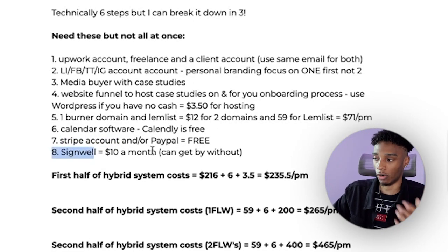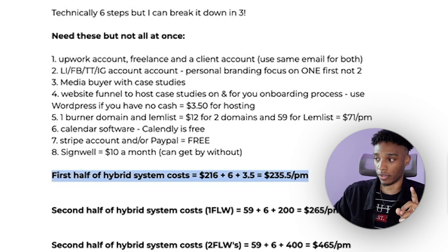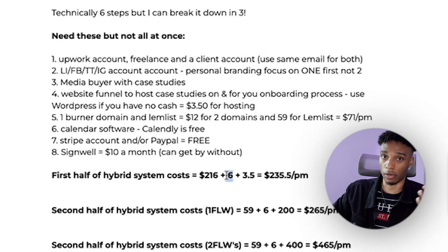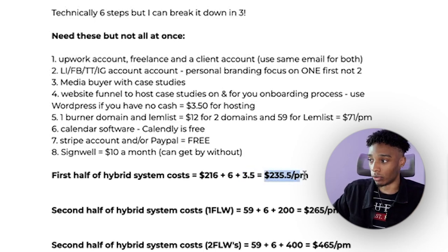There are two sides to the hybrid system: inside Upwork and outside Upwork via cold outreach. The first half of the hybrid system is going to cost around $216 for connects, $6 for a domain, and $3.54 for WordPress hosting — totaling about $235.50 per month. If you don't have that, go sell some shoes on eBay, get a part-time job, do whatever you have to do to raise $235.